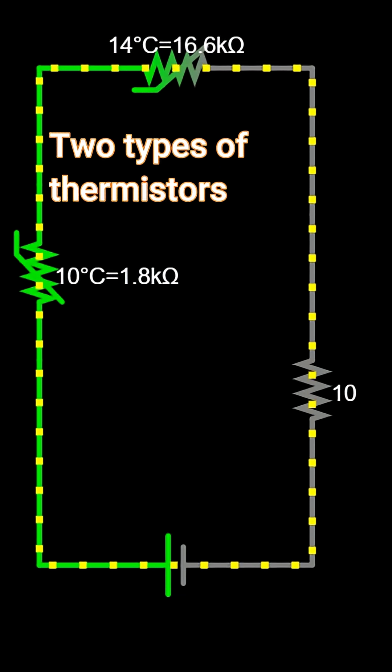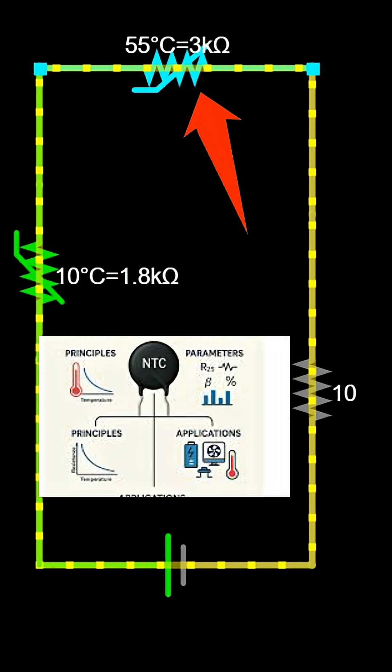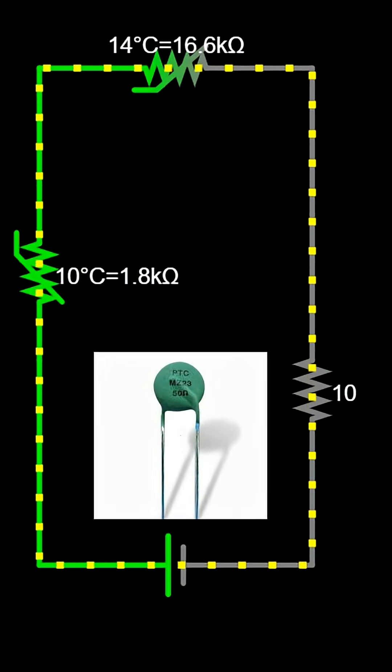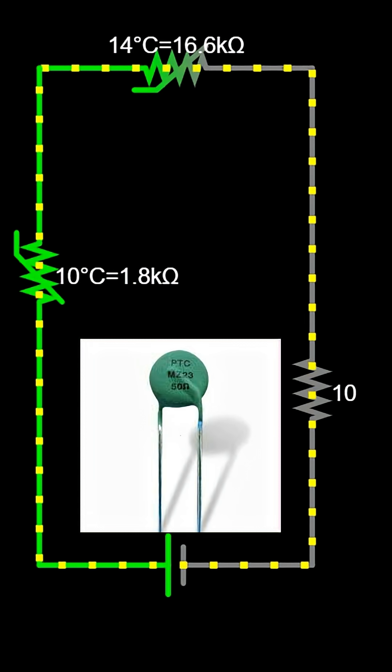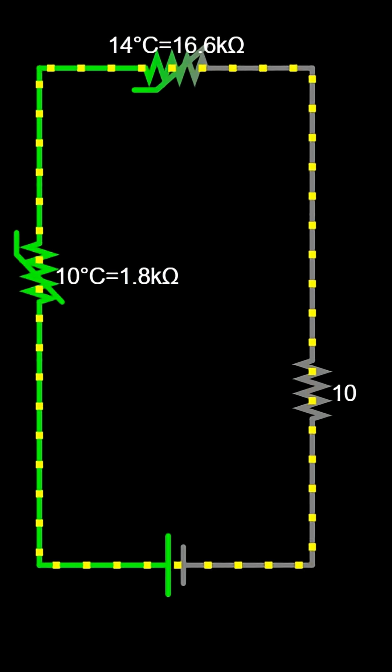There are two main types of thermistors. NTC – negative temperature coefficient – resistance decreases when temperature increases. PTC – positive temperature coefficient – resistance increases when temperature increases.